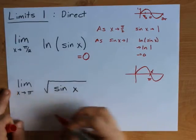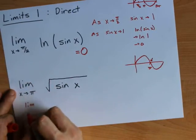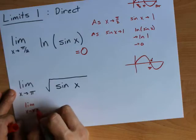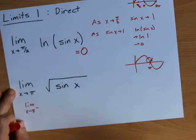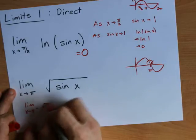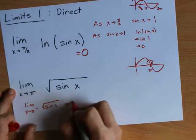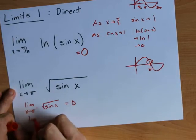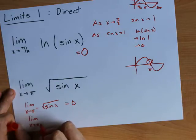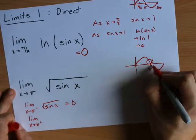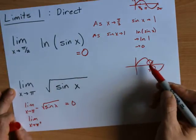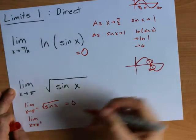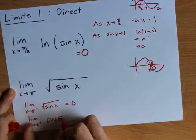But the limit as x approaches pi from the left is a positive number, which you are allowed to take the square root of. So that limit is 0. But the limit as x approaches pi from the right on the sine graph is actually a negative. You cannot take the square root of a negative and get a real number out. So that limit does not exist.